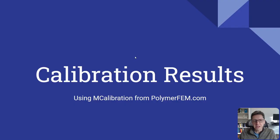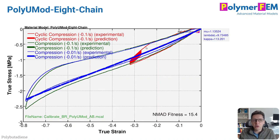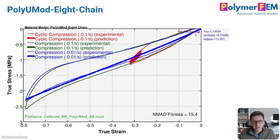I've calibrated a number of material models to this data using mCalibration, and I'm going to go through some results, highlighting the key points, going from worst to best. The worst is a basic hyperelastic model — it's basically just a straight line in the middle. Not very good. Here's an example where hyperelasticity is not a good choice for a rubber material. The error is about 15%.